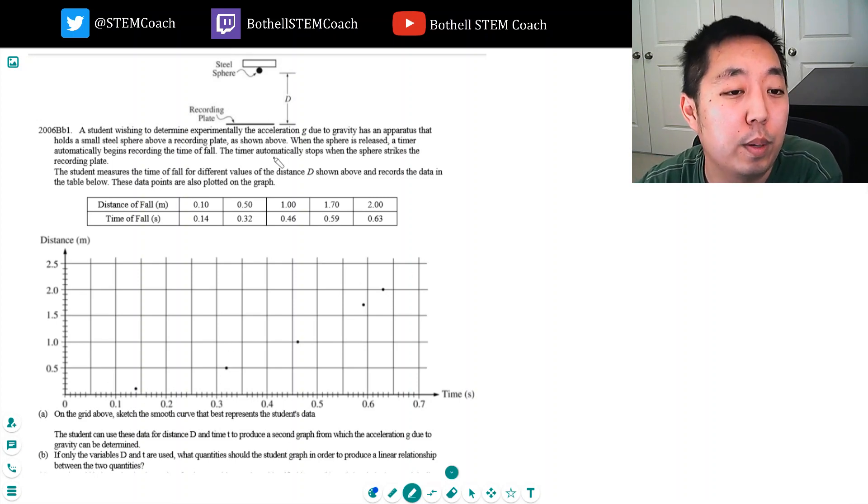A student wishing to determine the experimental acceleration due to gravity uses an apparatus that holds a small steel sphere above a recording plate. When the sphere is released, the timer automatically begins recording time of fall and stops when the sphere strikes the recording plate. The student measures the fall for different values of the distance d and records the data in the table below. These data points are plotted on the graph.